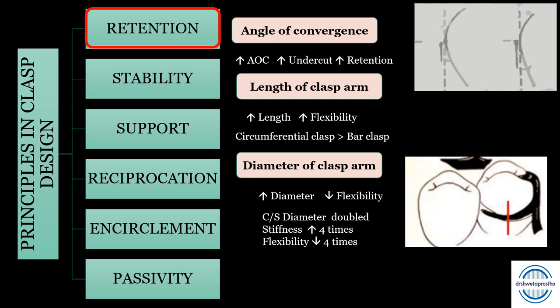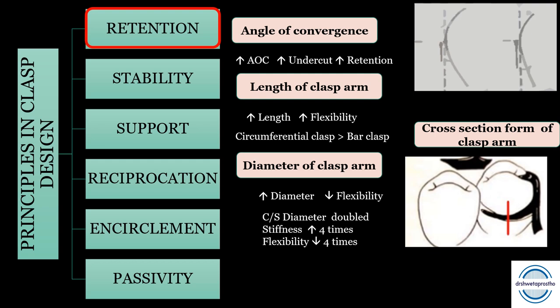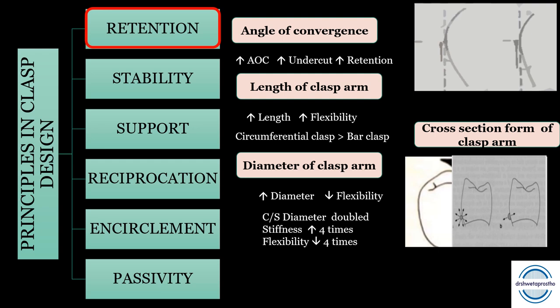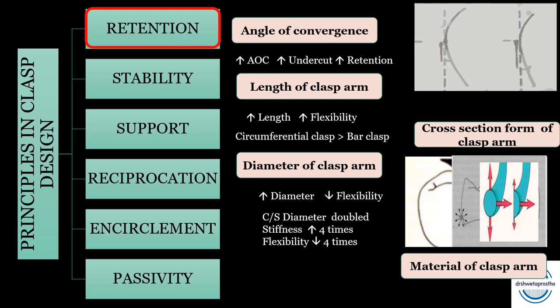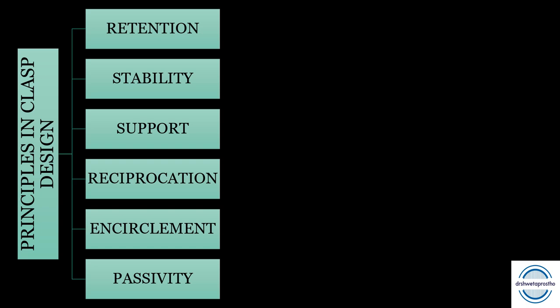When the cross-sectional diameter is doubled, stiffness increases by 4 times and flexibility decreases by 4 times. Cross-sectional form of the clasp arm: when round, it flexes in all directions and is mainly used in distal extension cases to reduce stresses. The half-round clasp flexes only in one direction, away from the tooth. Regarding material: cast gold alloy is more flexible than cobalt-chromium, so for deeper undercuts we use gold alloys and for less undercuts we use cobalt-chromium alloys.